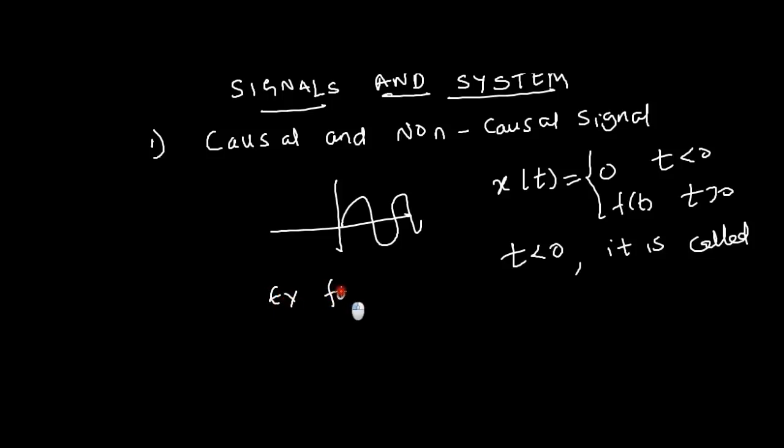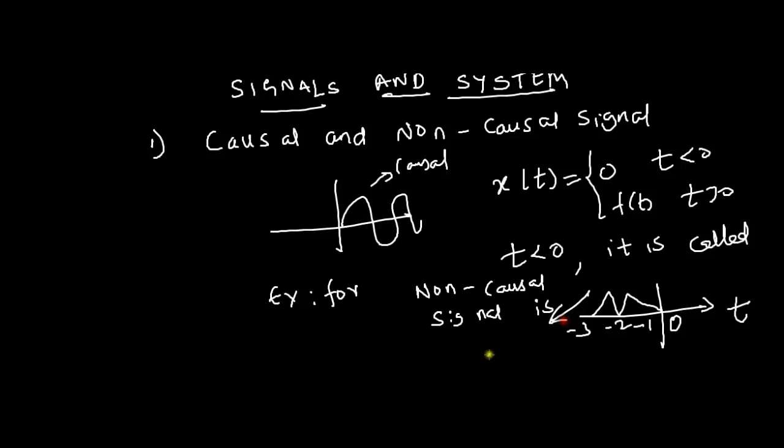This is an example of a non-causal signal. If we consider the x axis as time period and this is 0, it exists for minus 1, minus 2, minus 3. So this is an example of non-causal signal. If you want to make any signal causal, just multiply it by u of t.